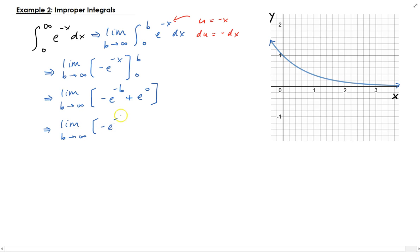We're going to get the limit of minus e to the negative b plus the limit of e to the zero, which is just one as b. For this limit, this is just the limit of a constant, so we get one here.